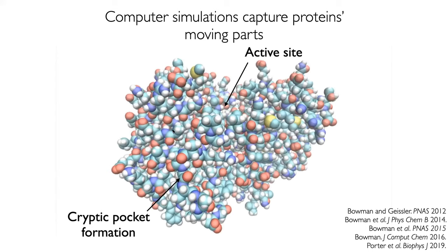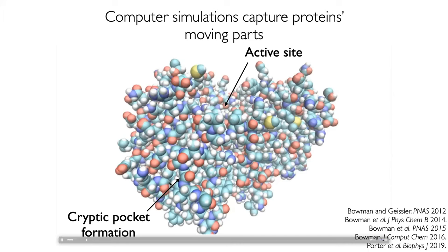This is an atomically detailed structure of one of our favorite proteins — the spheres represent all the atoms. This is a really rich source of information; we can immediately see what's called the active site, the pocket where this particular protein catalyzes a chemical reaction. But we know that there's a lot more to the story. As rich as the information content of this one structure is, it's just the tip of the iceberg. One of our specialties is using computer simulations to simulate how every atom in a protein like this moves over time, to improve our understanding of how these machines function and how we can control them.